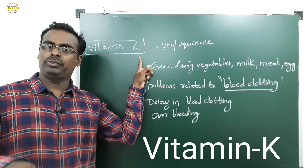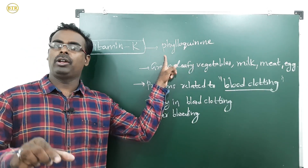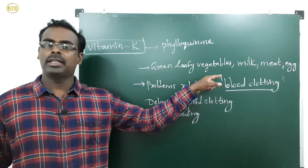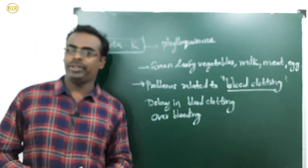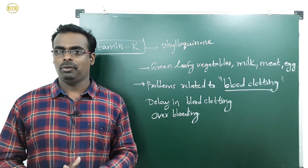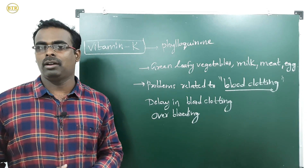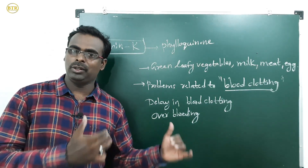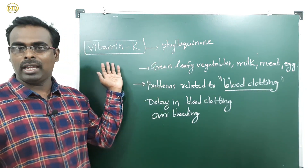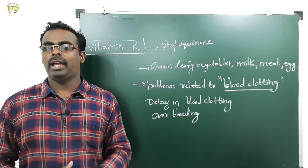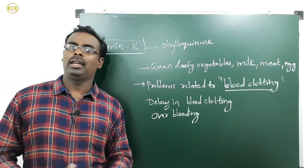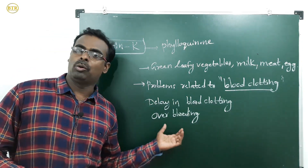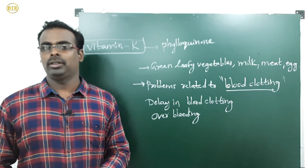The fourth and last fat-soluble vitamin is vitamin K, with scientific name phylloquinone. It is available in green leafy vegetables, milk, meat, and eggs. Vitamin K helps in blood clotting — the freezing of blood to stop bleeding. Deficiency of vitamin K causes delayed blood clotting and over-bleeding, which can ultimately lead to death.